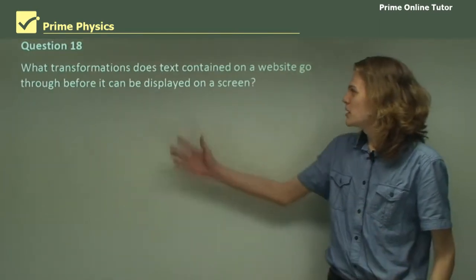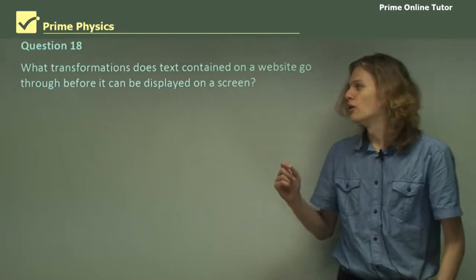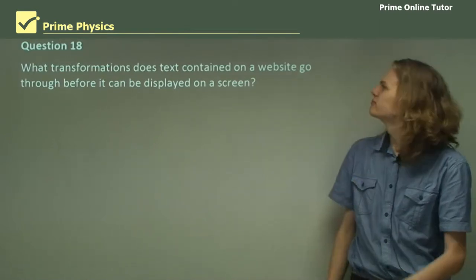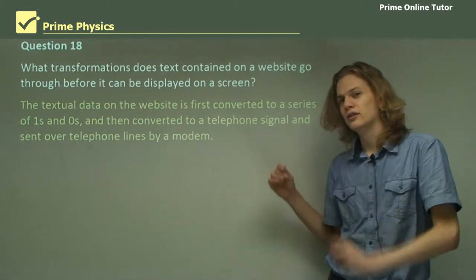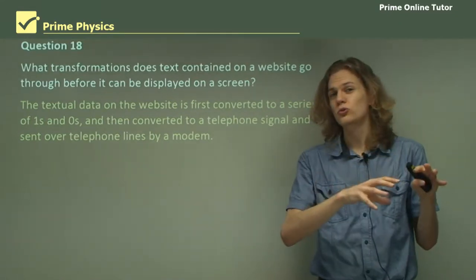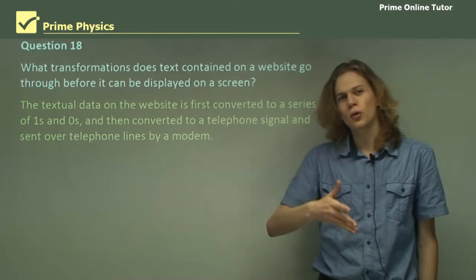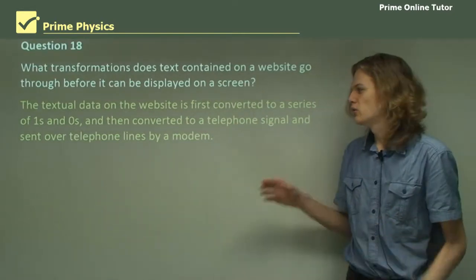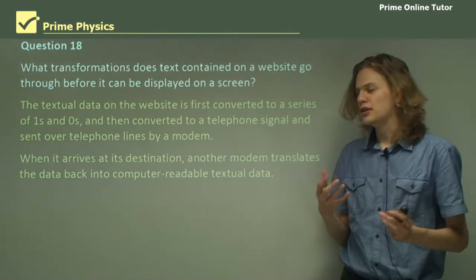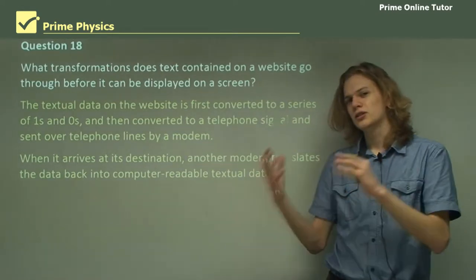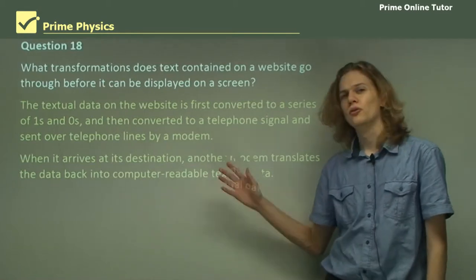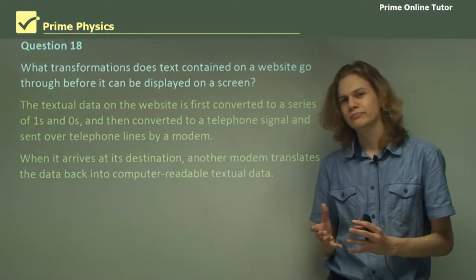Question 18. What transformations does text contain on a website go through before it can be displayed on a screen? We have a few transformations here. Let's go through them. First of all, we convert the text data to ones and zeros. We reduce the text data to numbers and those numbers to base two numbers, which consist of just on and off pulses. Then we can encode that into a signal that's sent through a modem over telephone lines. When it arrives at the destination, then we take the telephone line signals, turn them back into ones and zeros, turn those back into text data, and have the computer on the other end receive and decode those signals.